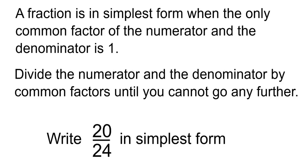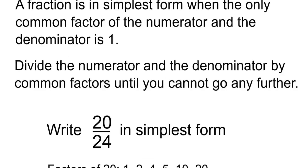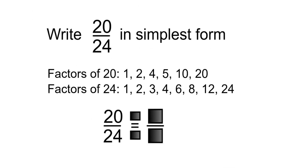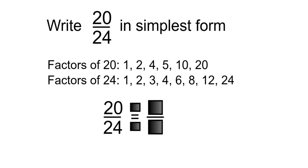Write 20 over 24 in simplest form. Factors of 20 are 1, 2, 4, 5, 10, and 20. Factors of 24 are 1, 2, 3, 4, 6, 8, 12, and 24. The greatest common factor of both is 4.